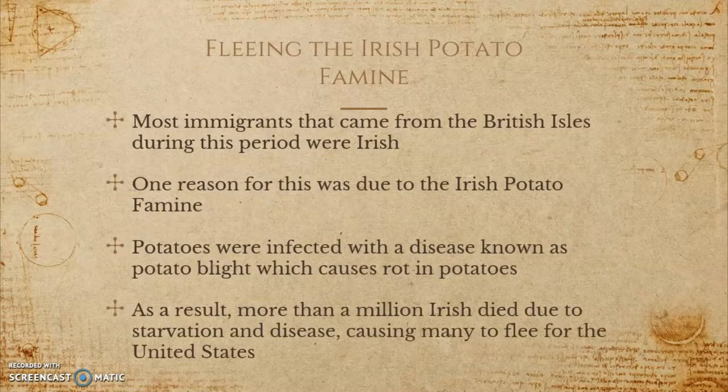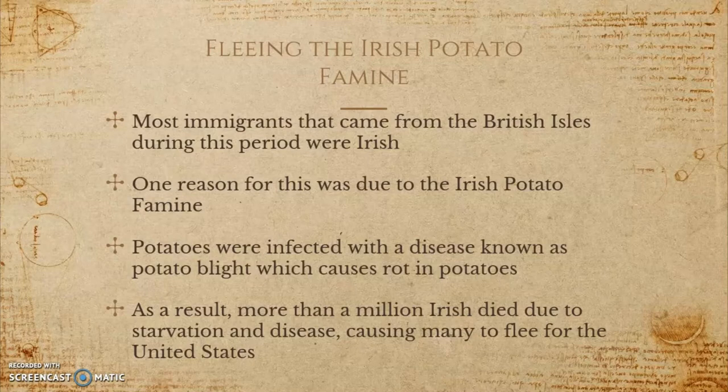Most immigrants coming from the British Isles during this period were Irish, and the reason many Irish immigrated to the United States is due to what is known as the Irish potato famine. A fungus-like organism spread across Ireland causing potatoes to rot, and many farmers in Ireland depended heavily on the potato as a food source. The result of this event had a catastrophic impact on Ireland and its population.